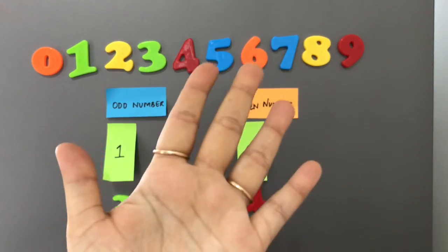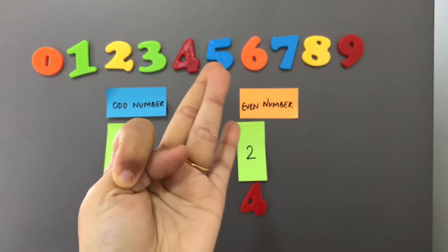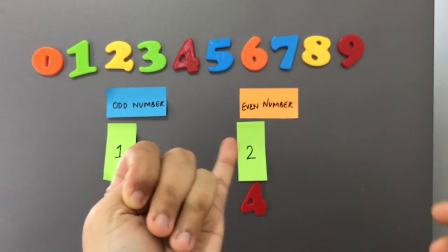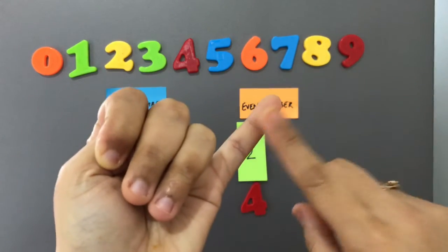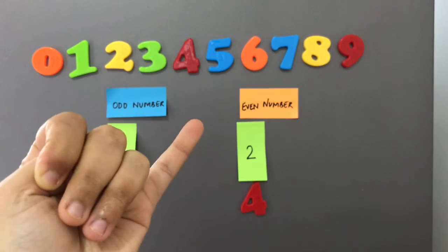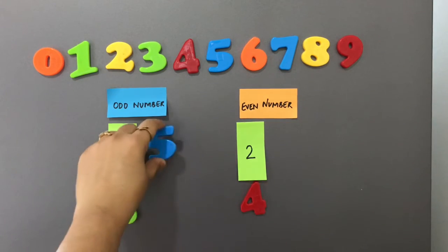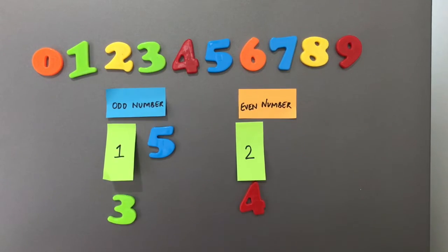Number five. These two form a pair and these two form a pair. Oh no. This little finger is left alone. So number five is an odd number.